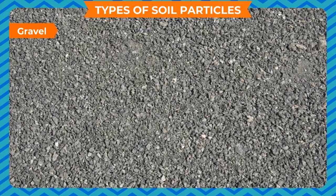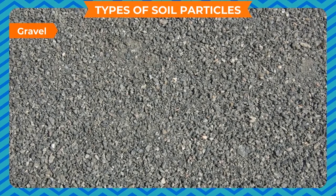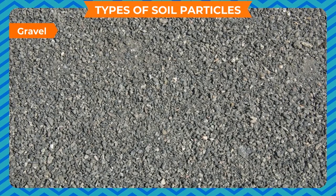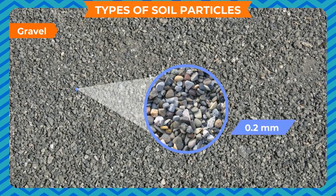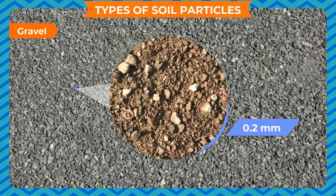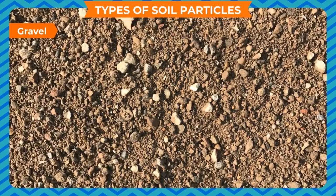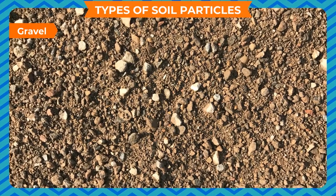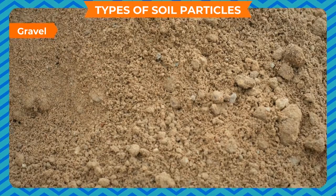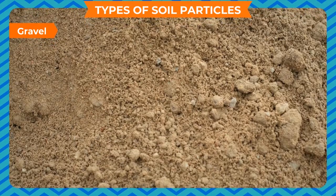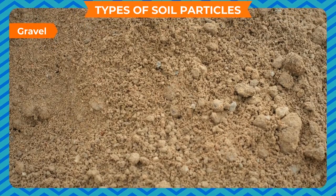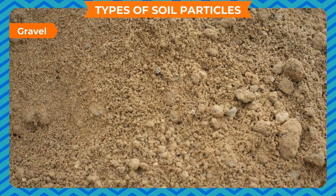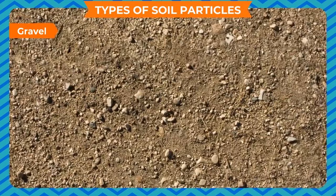Sand is not quite ideal for the growth of plants. Gravel: Gravel are small-size stones present in the soil, with size more than 0.2 mm. Topsoil is a mixture of all the above varieties of soil particles. A good soil is a mixture of all these types along with humus.